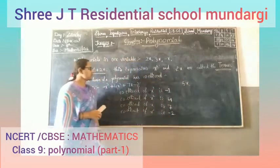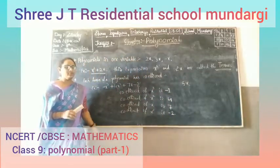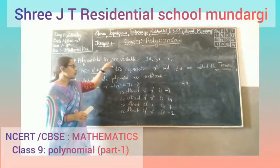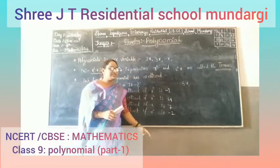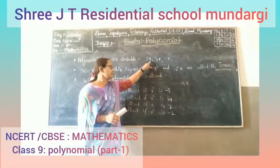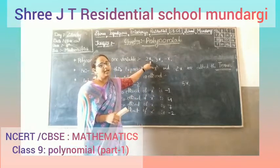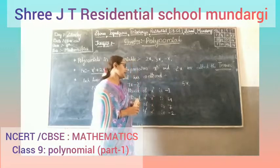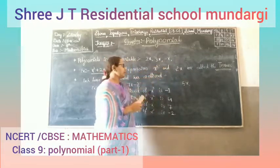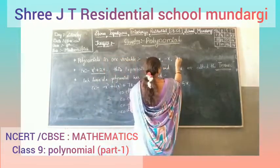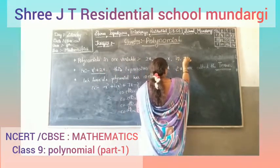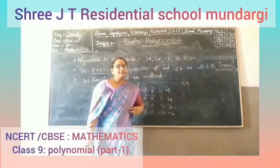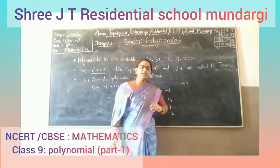Now let's look at polynomials in one variable. For example, 2x — here x is a variable, and only one variable is present. Similarly, 3x is also a polynomial in one variable. Examples like 2x, 3x, and similar expressions are all examples of polynomials in one variable.